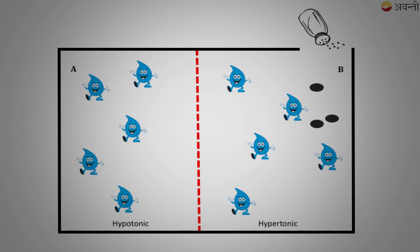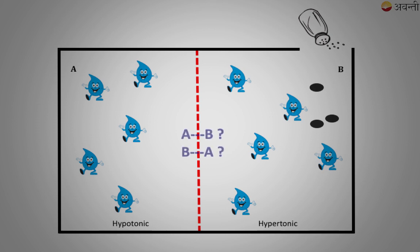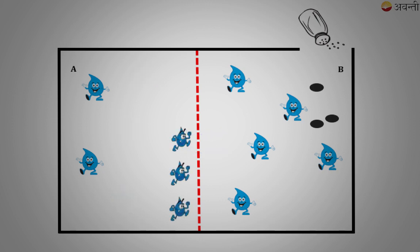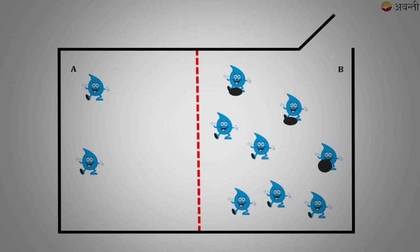Let's name side A as hypotonic, showing more water concentration and low solute concentration, and side B as hypertonic, having a high solute concentration. The salt molecules are too large to pass through the membrane, so the water molecules pass from side A to side B. Water, which is the solvent, always moves to the area of higher solute concentration — think of the water trying to equalize the concentration by diluting side B. So now the net movement at equilibrium is zero.